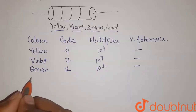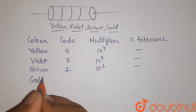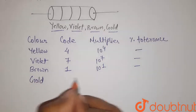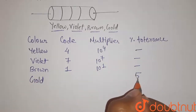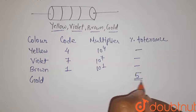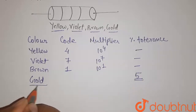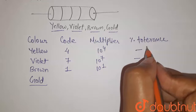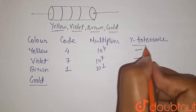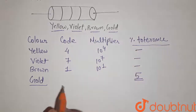The last color is gold. For gold, we have a specified percentage tolerance. The colors gold and silver are used to indicate the percentage tolerance, which represents the error in the resistance value.